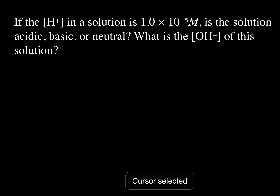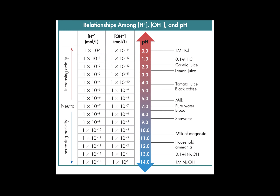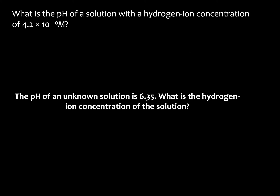Now, let's talk about pH. pH is the measure of the hydronium ion concentration in a solution, and the pH scale is based on numbers 0 to 14. A pH less than 7 means an acidic solution; equal to 7 means neutral; and greater than 7 means basic. There's also a chart showing relationships among H⁺, OH⁻, and pH, with common household items and their pH values, as well as formulas to calculate pH and pOH concentrations.